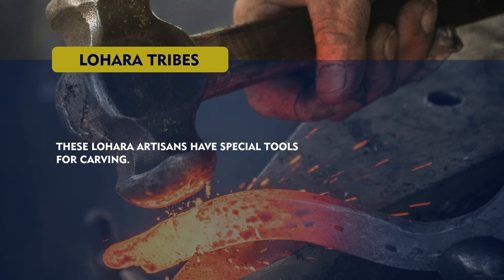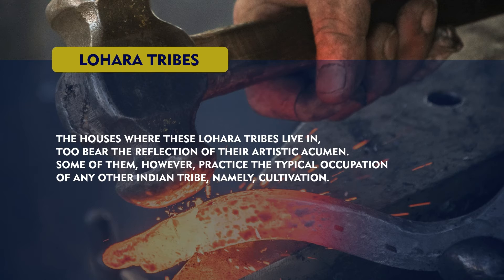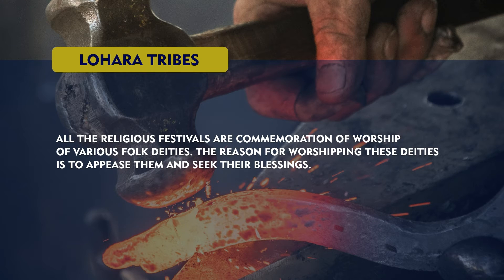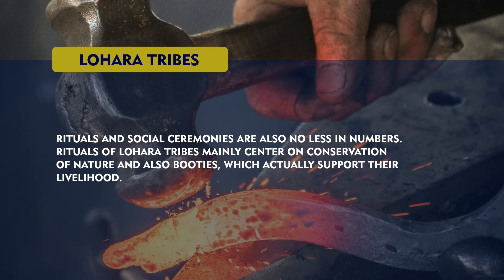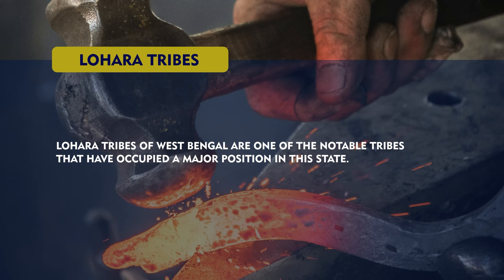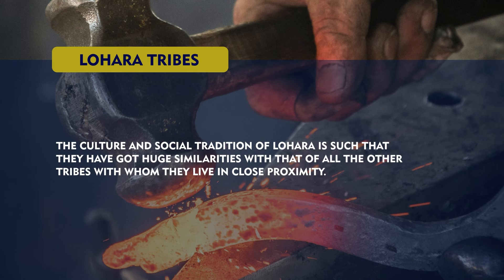The houses where these Lohara tribes live bear the reflection of their artistic acumen. Some of them however practice the typical occupation of any other Indian tribe, namely cultivation. The Lohara tribe of West Bengal have a plethora of festivals. Some of the festivals are celebrated at individual homes or as community feasts. All the religious festivals are commemorations of worship of various folk deities. The reason for worshipping these deities is to appease them and seek their blessings. Rituals and social ceremonies are also no less in number. Rituals of Lohara tribes mainly centre on conservation of nature and also the resources which support their livelihood. Festive mood gets heightened with incorporation of beautiful dance forms and joyful songs. Lohara tribes of West Bengal have got huge similarities with the other tribes with whom they live in close proximity.